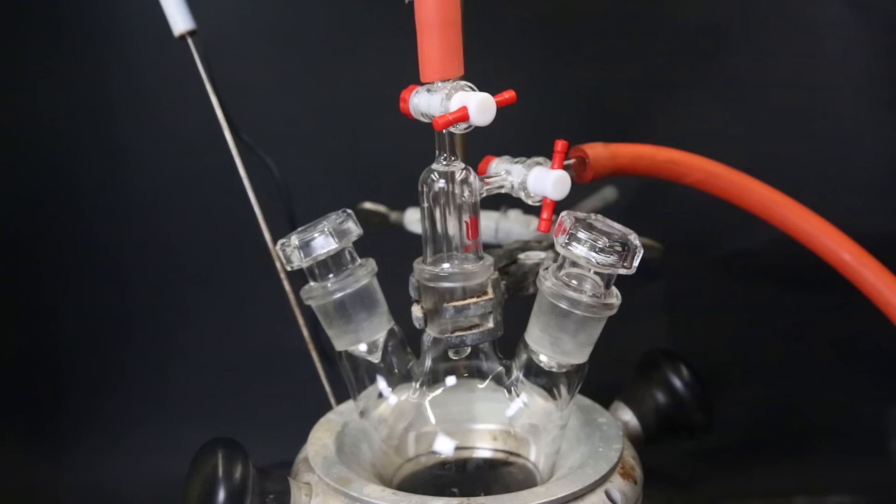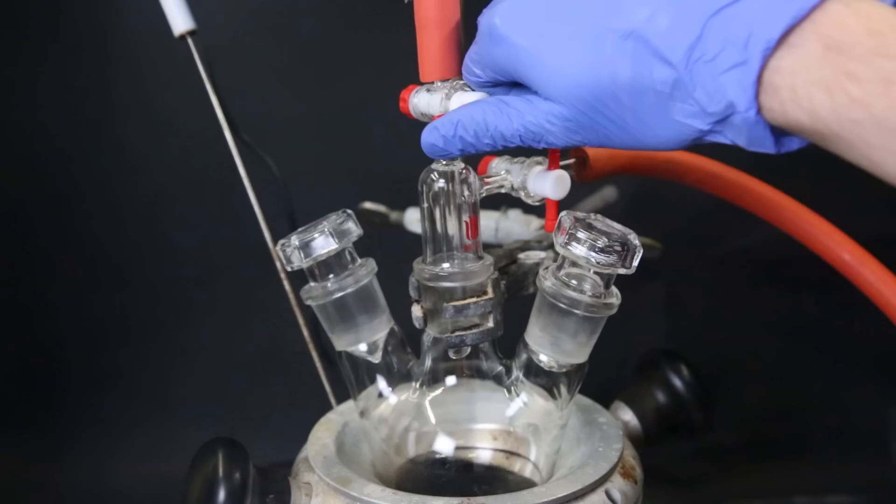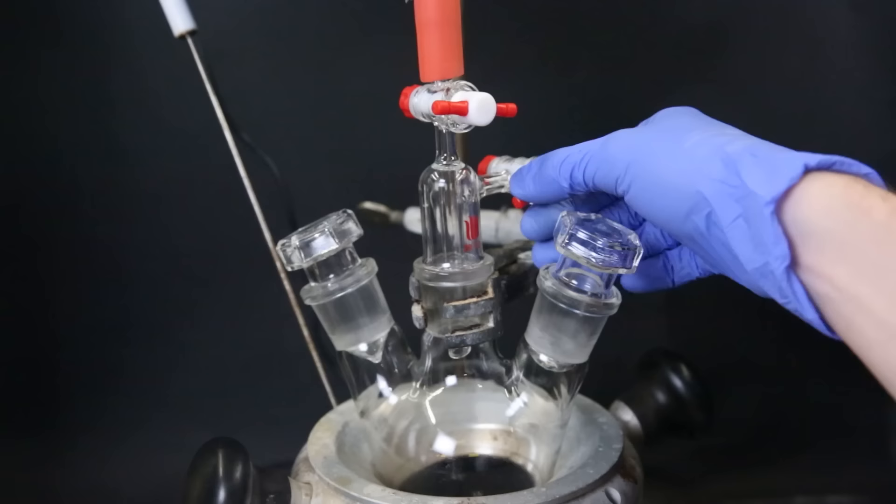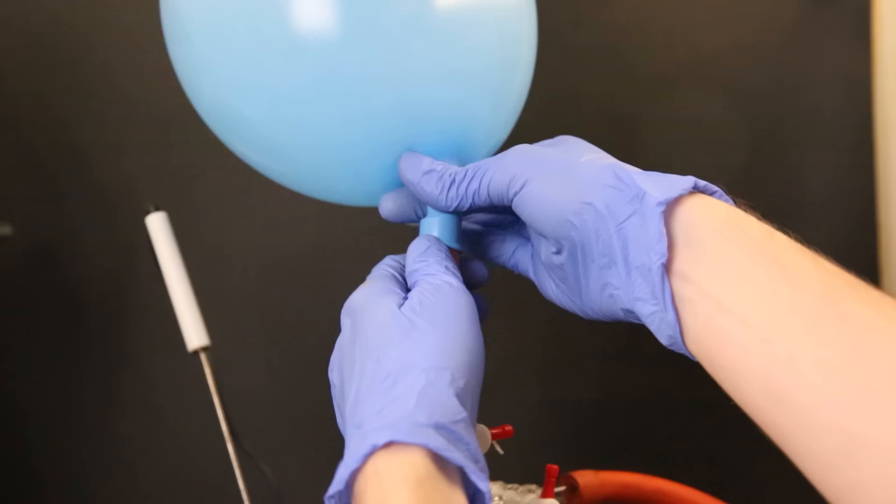So I open the way to the vacuum pump and remove all of the air from the setup. Then I close it off and there is now a slight vacuum in the setup. So now I can open the way to the balloon which will cause the pressure in the balloon and the setup to equalize. So the argon from the balloon will quickly rush into the setup and fill the atmosphere inside. This process is one purging cycle and is done three times to make sure all of the oxygen has been removed. When that is done, I can move on with the next step.